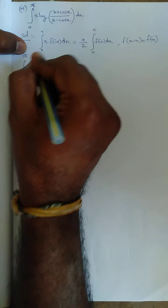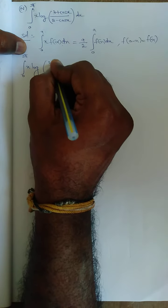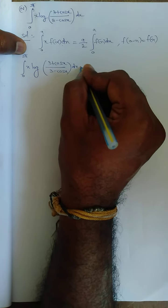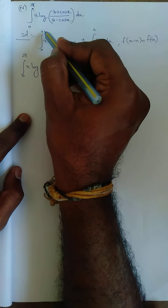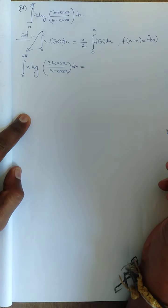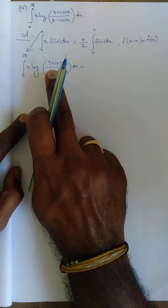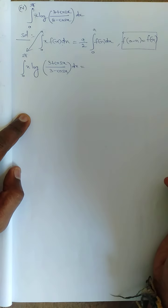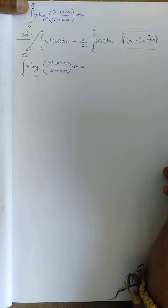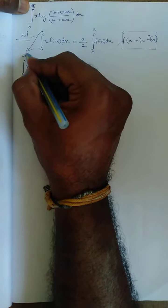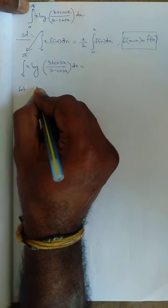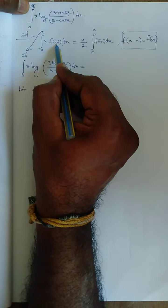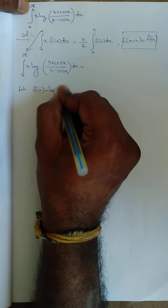Our integral is ∫₀²π x·log[(3+cosx)/(3-cosx)] dx. Comparing with the property, a = 2π here. Before solving, I need to verify the condition. Let f(x) = log[(3+cosx)/(3-cosx)]. I need to compute f(a-x) = f(2π-x).